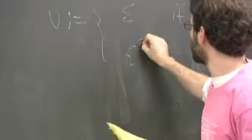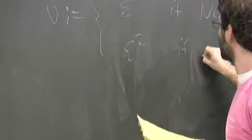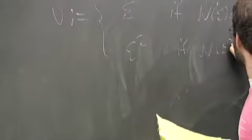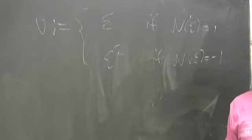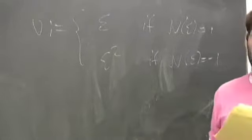this V he sets to be the fundamental unit if the norm is 1 and square it if the norm is minus 1 so that this V is the smallest unit with norm 1. It's either the fundamental unit or the square of it.